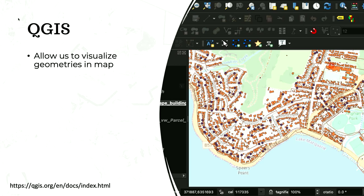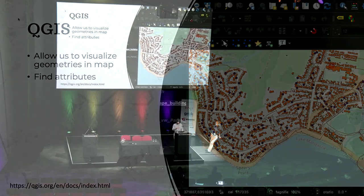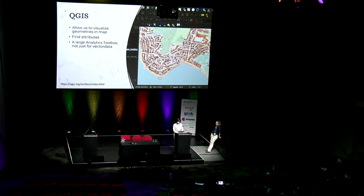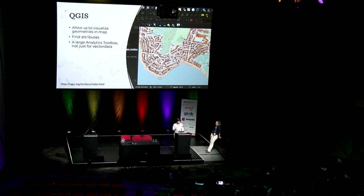The first stop is QGIS. When we receive data from the client or download data from the internet, we will usually plug it into this tool and it will plot everything onto the map. We can scroll around just like on Google Maps, and we can click on shapes to find attributes associated with them. Here we have orange polygons that are footprints of houses, and dots that represent points of interest. QGIS also has a lot of tools — it's a full-power analytics tool that can do all those geometric operations. It also has many third-party plugins, and you can write Python scripts that run in QGIS.